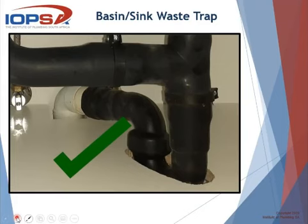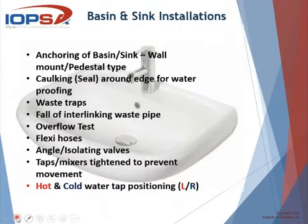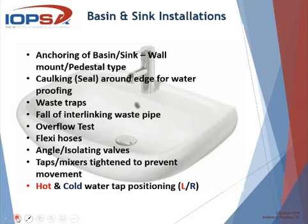Moving to basin and sink installations: important points include the anchoring of the basin or sink, whether wall-mounted or pedestal — make sure anchoring is correct. Caulking or sealing around the edge is required for waterproofing and splashback. We've spoken about traps already. Ensure proper fall of interlinking waste pipes so pipes can empty correctly. We'll also look at the overflow test and flexi hoses shortly.